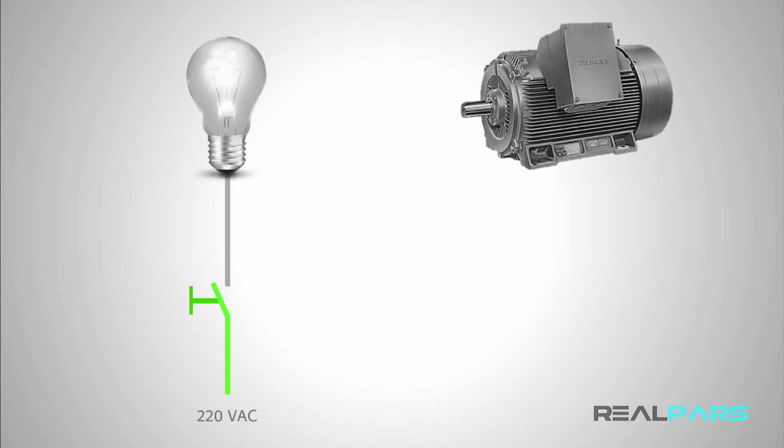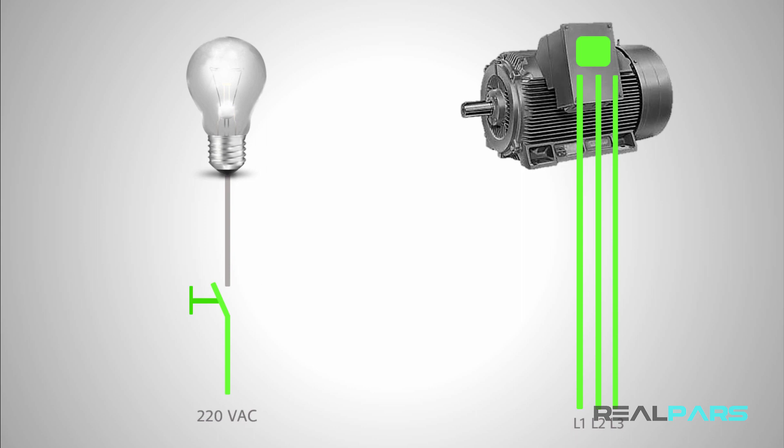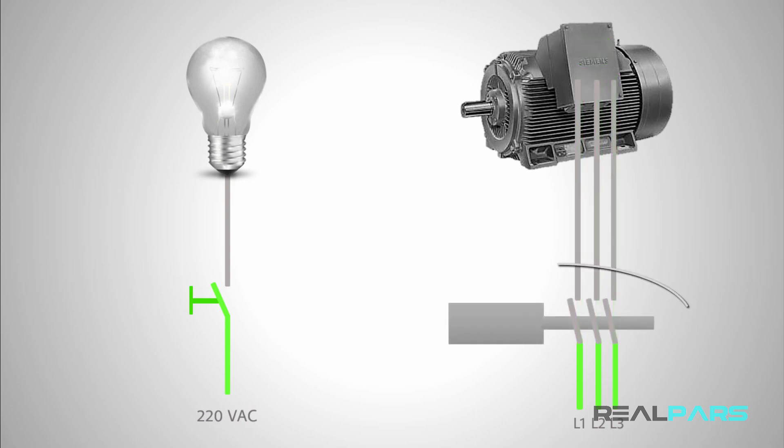Now, let's say you have an electrical motor instead of the lamp. To turn the motor on, you connect a three-phase power circuit to it. Now, if you want to be able to turn the motor on and off whenever you need it, just as you did for the lamp, you can add a switch here.